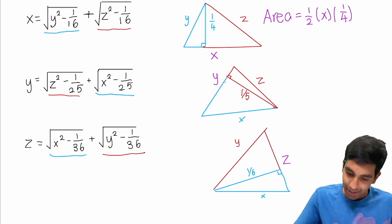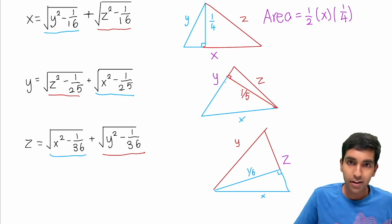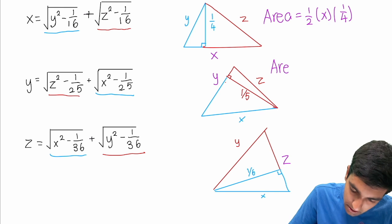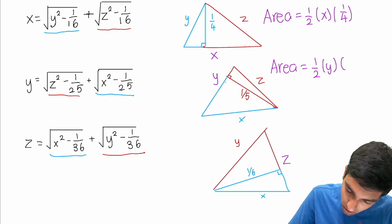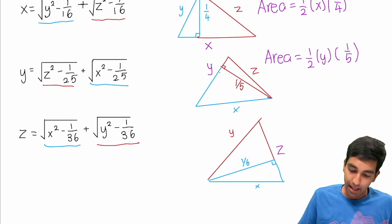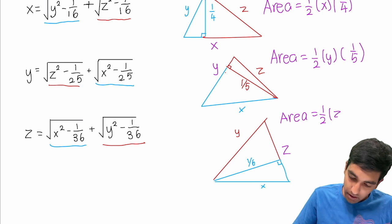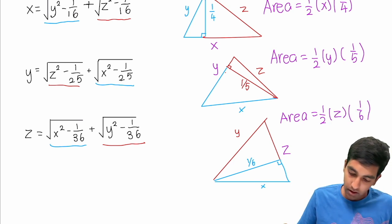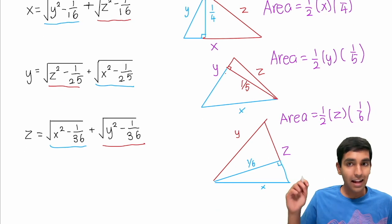The base is y and the height is 1 over 5, so area equals one half times y times 1 over 5. And last, area equals one half times z times 1 over 6. Guess what? All three of these areas are the exact same.